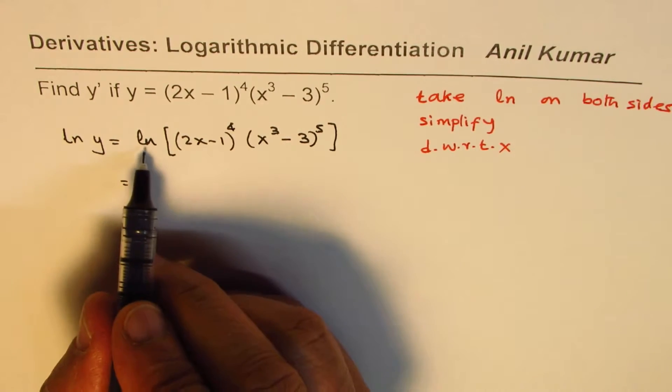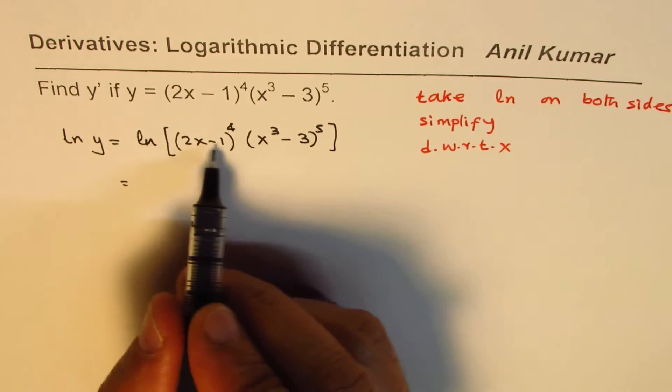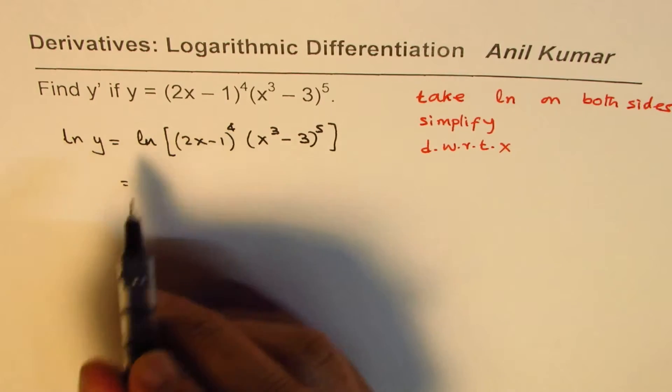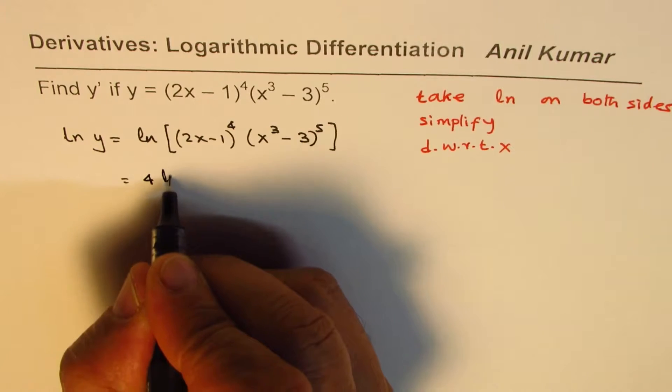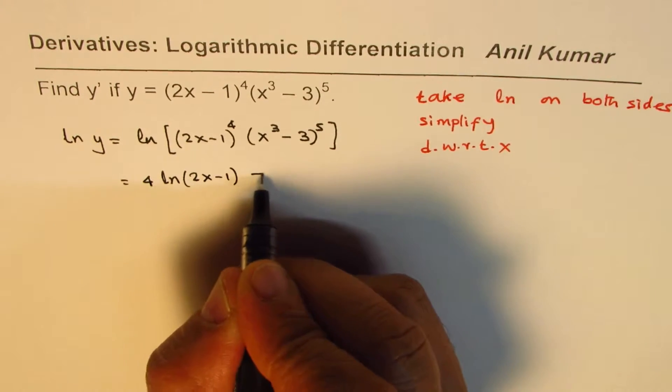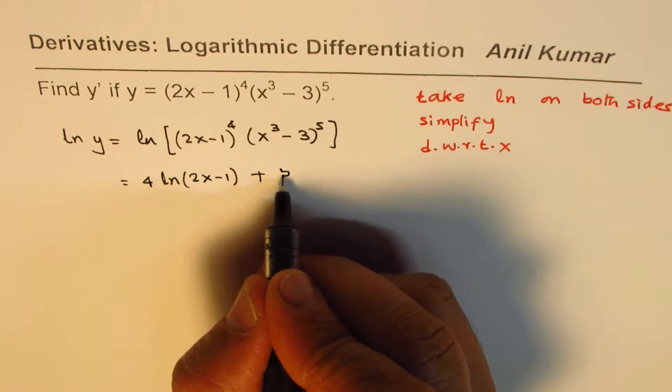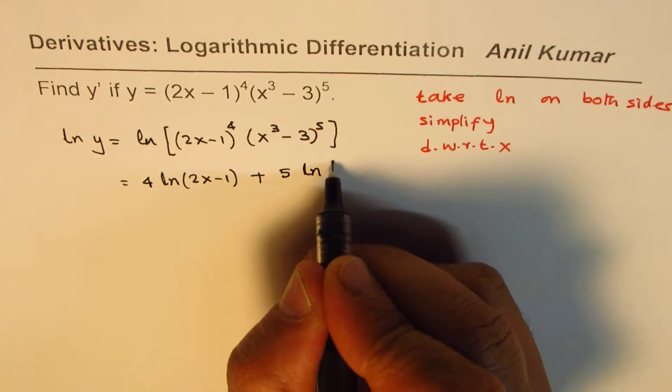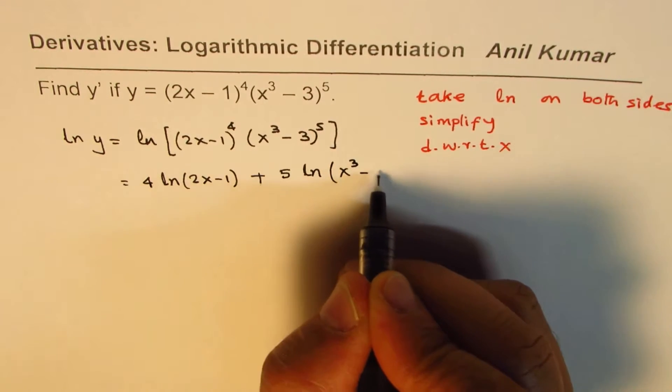Now, if you apply the rules for logarithms, this is the product, right? So it becomes the sum. Here is the power of 4, so I can write this as 4 ln(2x - 1) plus 5 ln(x^3 - 3).